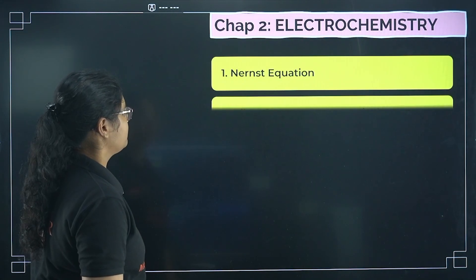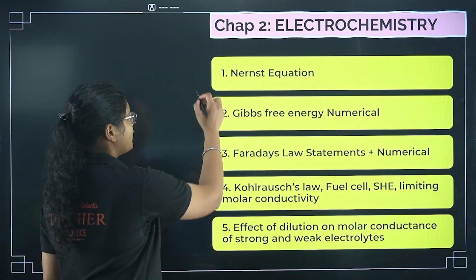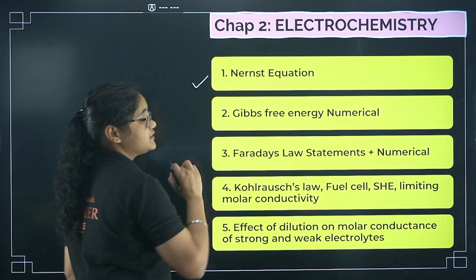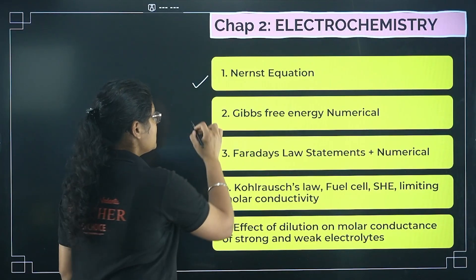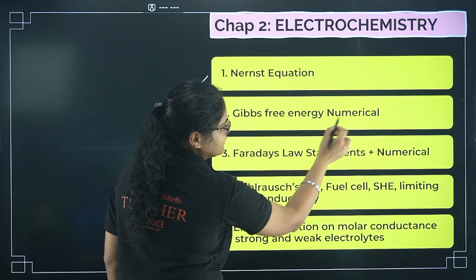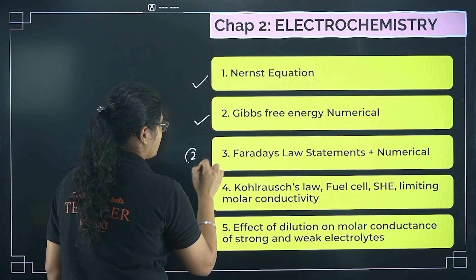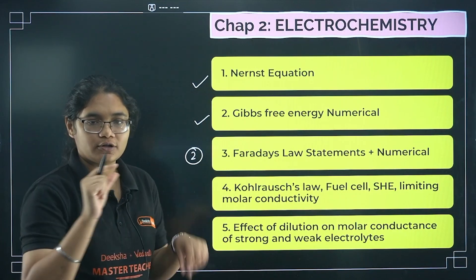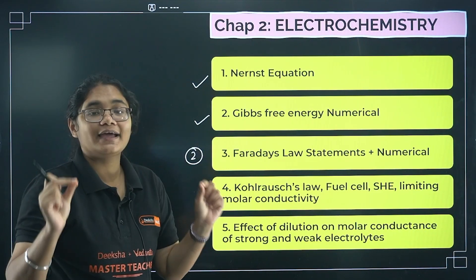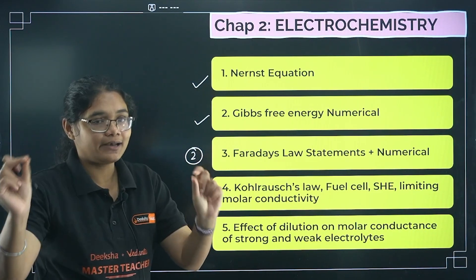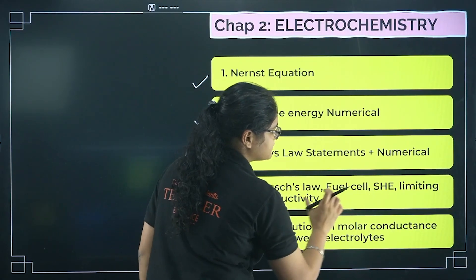Moving to the next chapter: Electrochemistry. First, learn how to solve Nernst equation questions — you need to practice those numericals. Gibbs free energy numericals are also important. Faraday's two laws — both first law and second law — their definitions, terminology, and mathematical expressions.